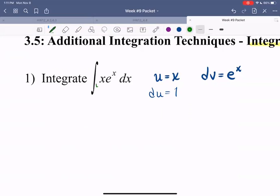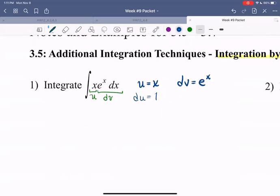Just to summarize here, this x is my u, and this e to the x dx is my dv. So I should have dx here as well. Awesome.